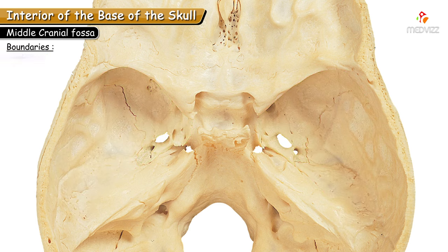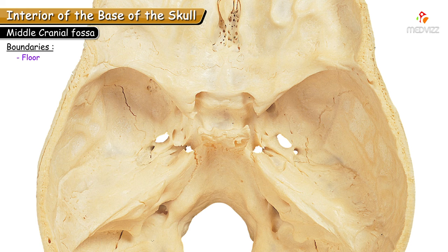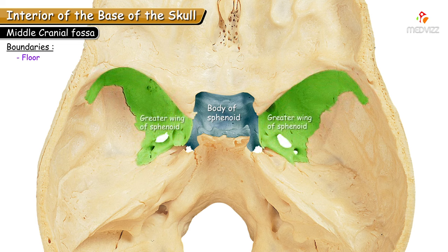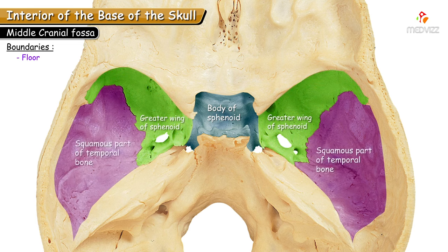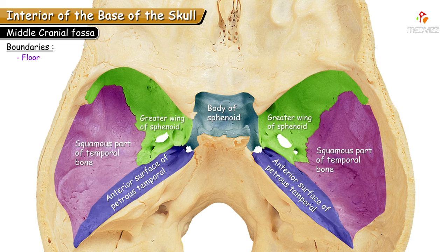The floor of the middle cranial fossa can be divided into a central portion and a lateral portion. The central portion is formed by the body of the sphenoid, and the lateral portion is formed by the greater wing of sphenoid, the squamous part of the temporal bone, and the anterior surface of the petrous temporal.